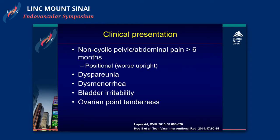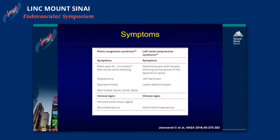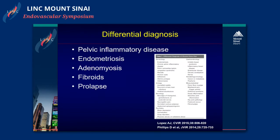The clinical presentation is typically non-cyclic pelvic or abdominal pain lasting more than six months. It is typically positional. There may be some problems of dysmenorrhea, bladder irritability, and ovarian point tenderness. It has to be differentiated from left renal compression syndrome, which typically has left flank pain, low abdominal pain, and also intermittent hematuria.